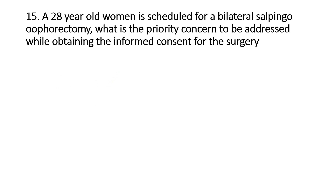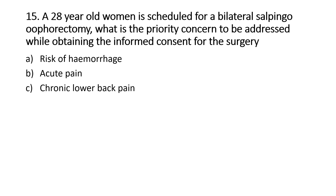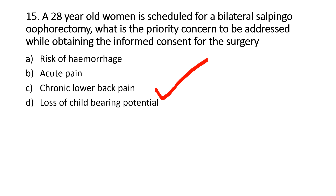A 28-year-old woman is scheduled for a bilateral salpingo-oophorectomy. What is the priority concern to be addressed while obtaining informed consent for the surgery? Option A, Risk of hemorrhage; Option B, Acute pain; Option C, Chronic lower back pain; Option D, Loss of childbearing potential. Right answer is Option D, Loss of childbearing potential. In bilateral salpingo-oophorectomy, both ovaries and fallopian tubes are removed, resulting in permanent loss of fertility.